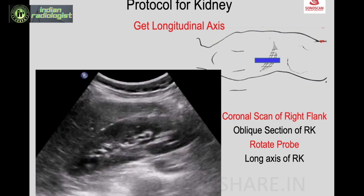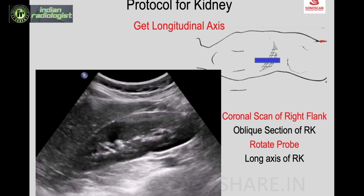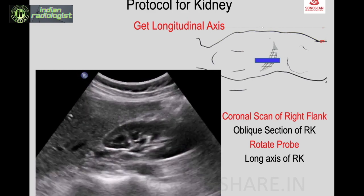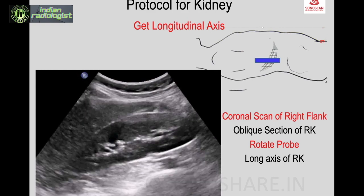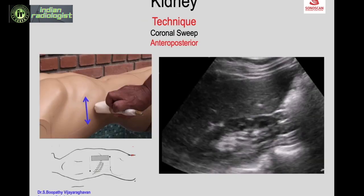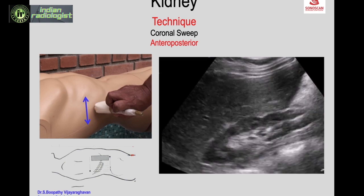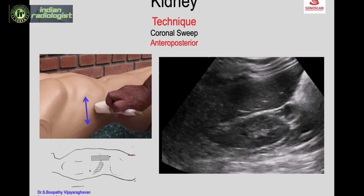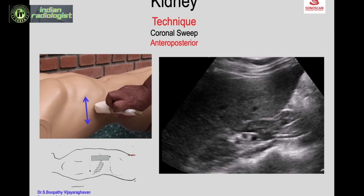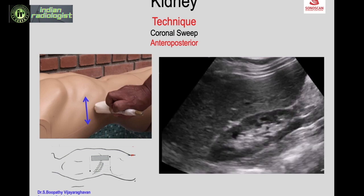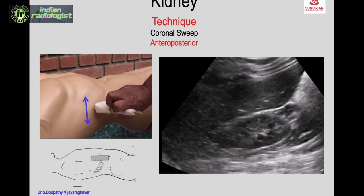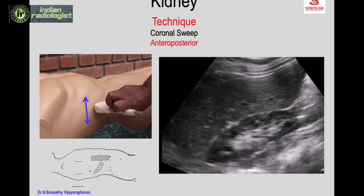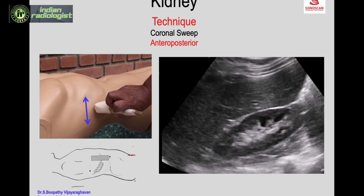If you further rotate it will become oblique again, so get back to the long axis — here it is a coronal scan. Once you get the longest axis in the coronal scan, then move anteriorly and posteriorly to get the sweep of the entire volume of the kidney in the coronal or sagittal scan.